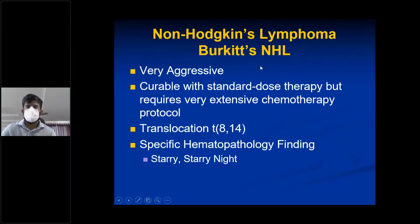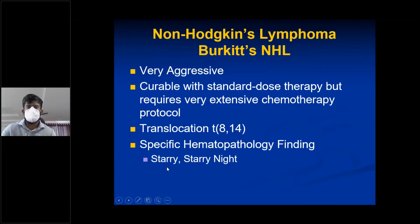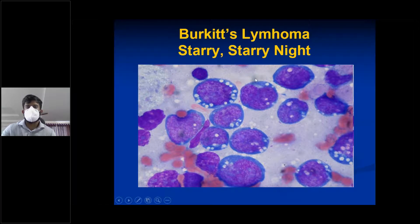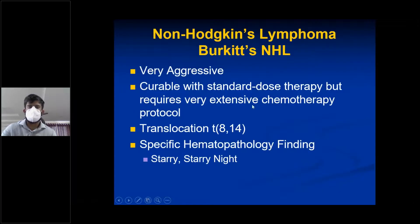The most important NHL subtype — and most commonly asked in exams — is Burkitt's lymphoma. It is very aggressive but curable with extensive chemotherapy protocols. The key translocation is t(8;14). The specific histopathological finding is the starry sky appearance, where macrophages scattered among lymphoma cells create a starry sky pattern.